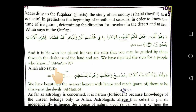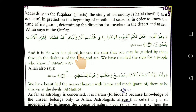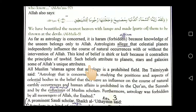Nowadays we have compasses and clocks for direction and time, but in previous days when there were no such facilities, people used the stars to find their direction — even during sea journeys — and to find the time. To get knowledge of stars for these useful activities is halal and permissible for human beings.